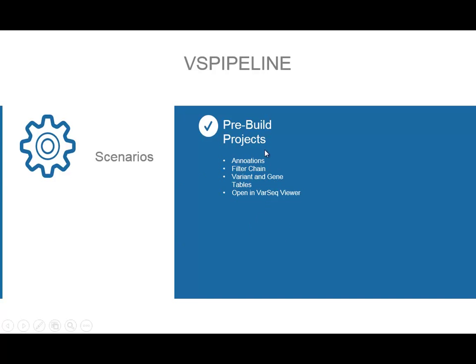This includes everything about your workflow — your annotations, your filter chain, all of the information about your tables. You might have one or more variant tables, gene tables. And as I will talk about in a second, you can open any of these projects in our free VarSeq Viewer, which is a viewer mode of VarSeq that can read projects that have already been created by a fully licensed copy of VarSeq or VarSeq Pipeline.